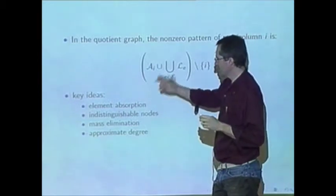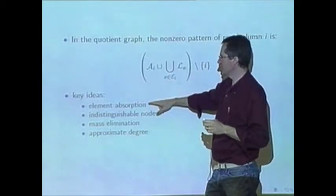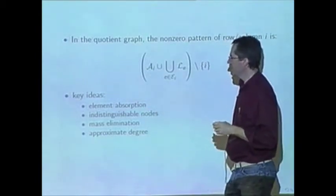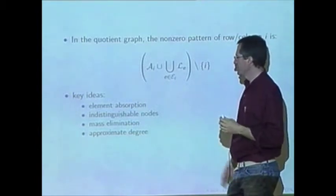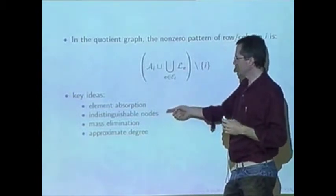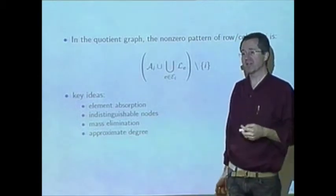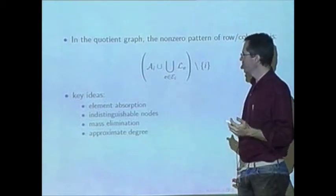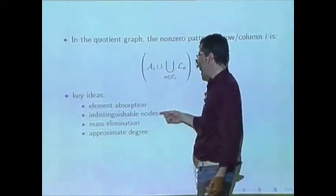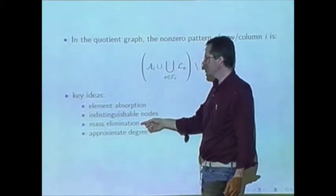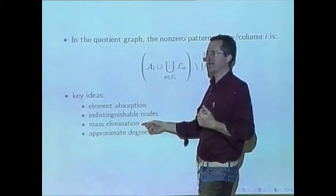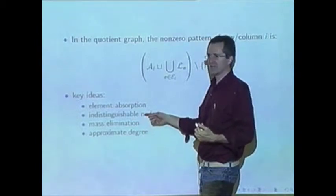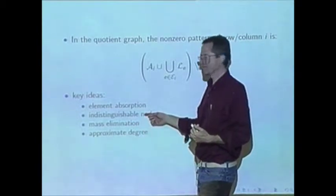So minimum degree is a good choice in practice. There are two more things that help this algorithm go much faster: one is indistinguishable nodes — which you've seen before with a different name, supernodes — nodes with the same non-zero pattern. And mass elimination, which is sort of like a last-minute detection of indistinguishability. Let's look at both of these.